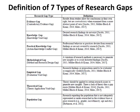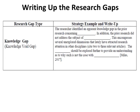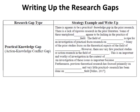Definitions of the seven types of research gaps are given in a table for reference. For writing up research gaps — covering evidence gap, knowledge gap, and practical knowledge gap — you can see example sentences with blank spaces in which you can fit words related to your own study.